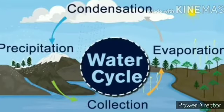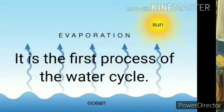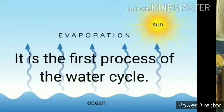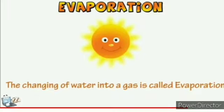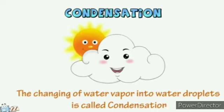There are four steps of the water cycle. The first step is evaporation — it is the first process of the water cycle. Evaporation is the changing of water into water vapor, into gas. That is called evaporation.